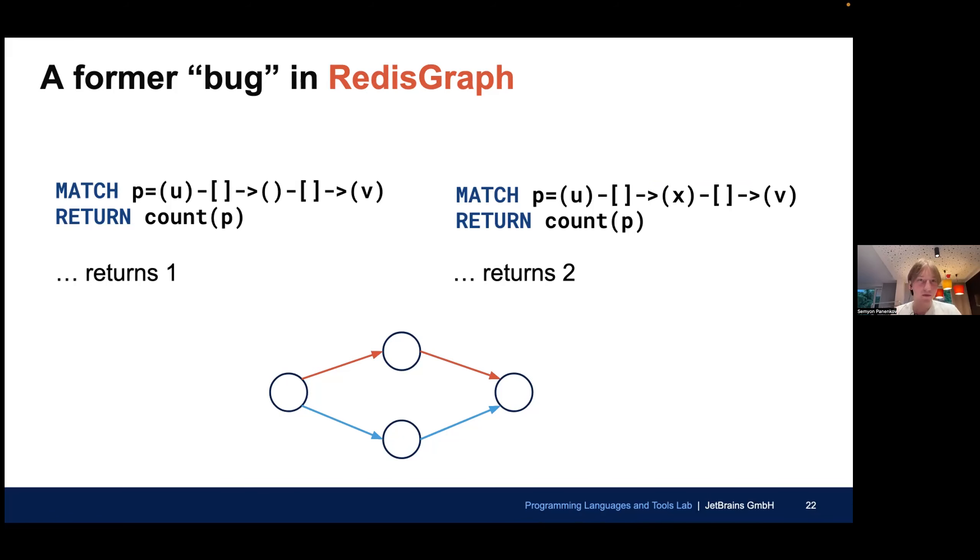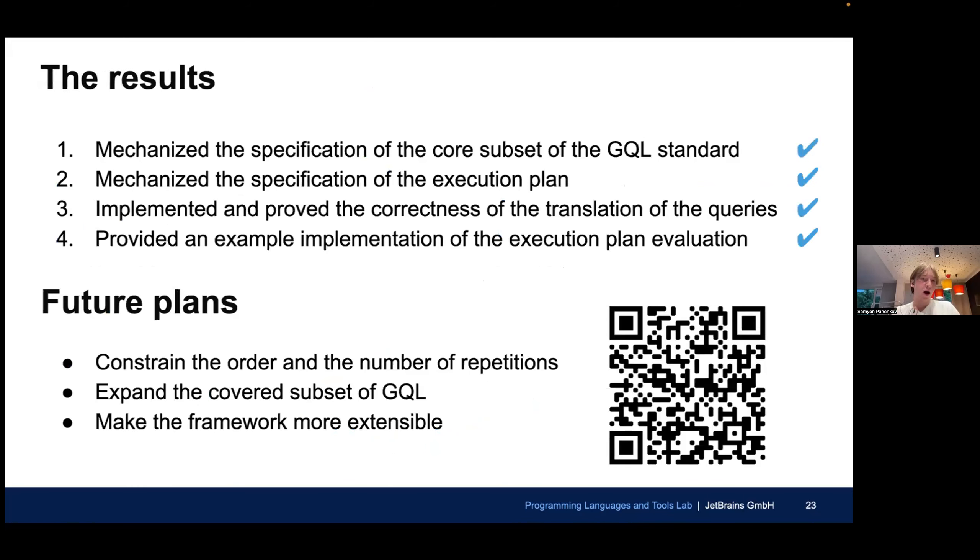In our future plans, one of the first of our future plans is to constrain the order and number of repetitions so that we can prove that this behavior can be fixed. And we also want to expand the current subset of GQL and new features and new keywords and make the framework more extensible so that our mechanization is in sync with the updates in the standard. Thank you for your attention. I'm ready for your questions.